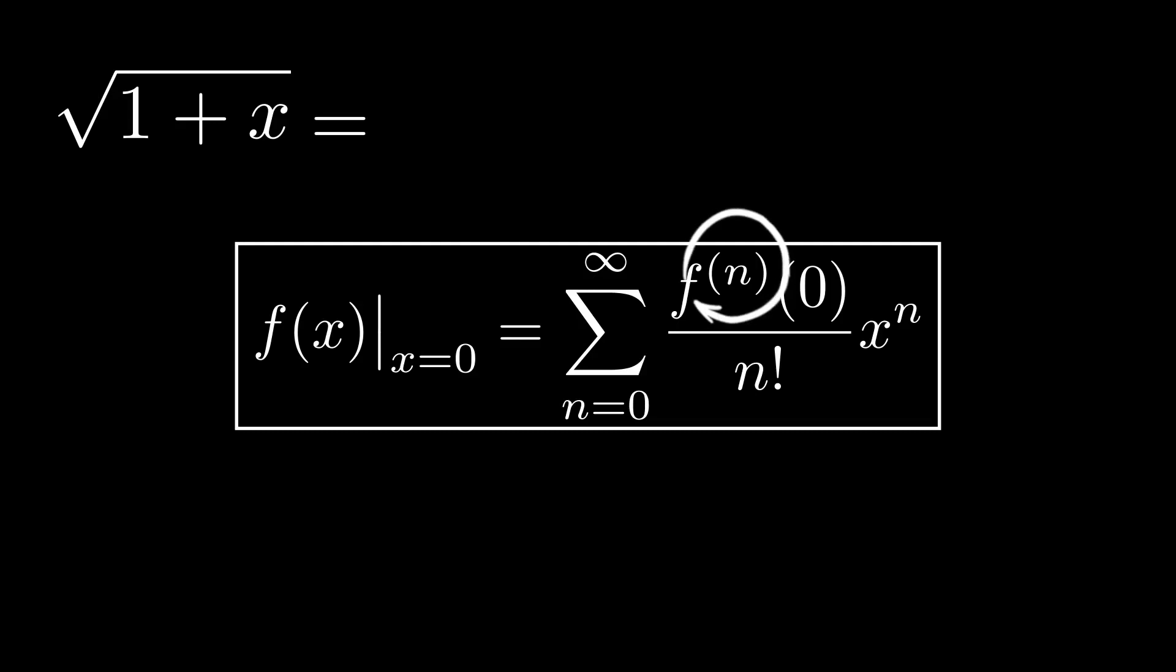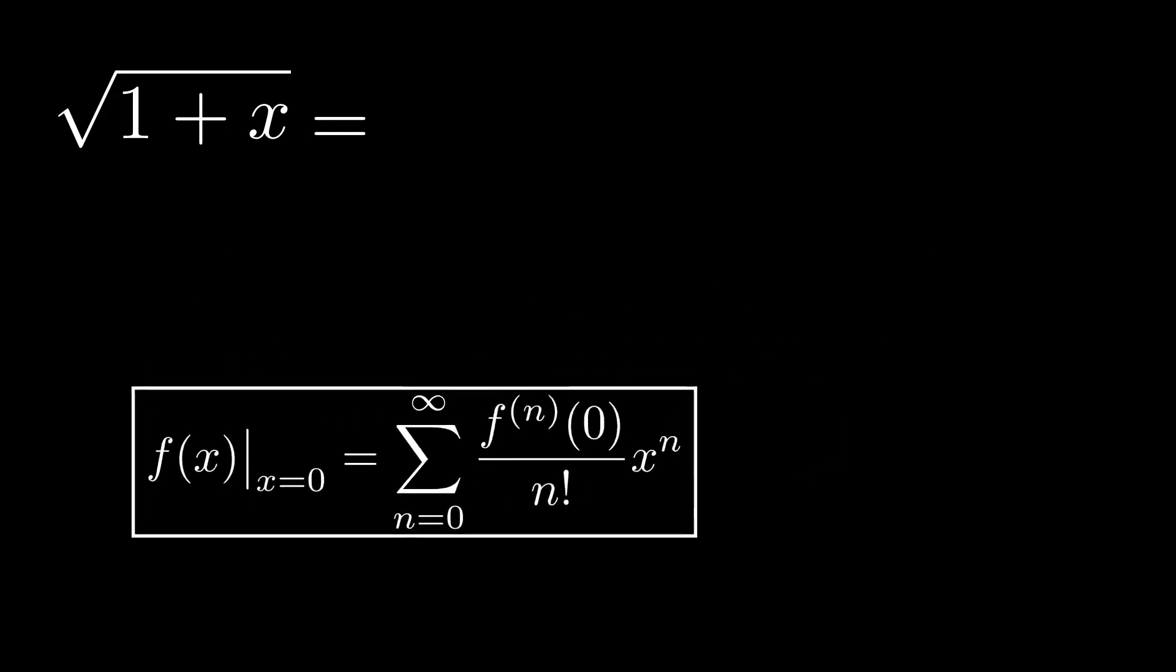The superscript n between brackets on the function denotes the nth derivative of this function. If this confuses you, don't worry. It will become clear by actually computing each term for our example.